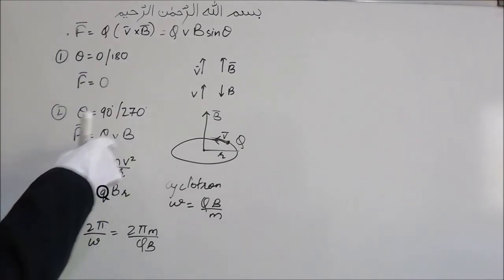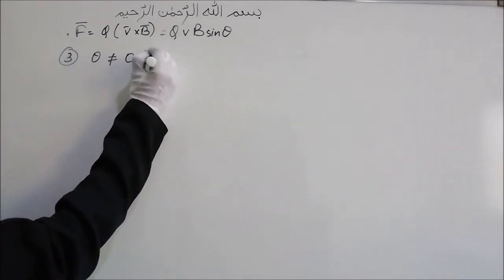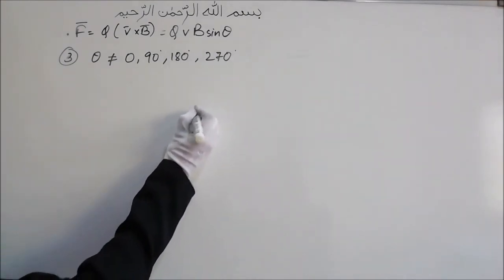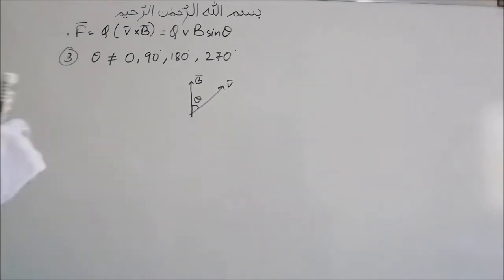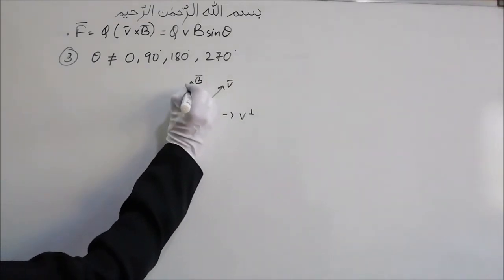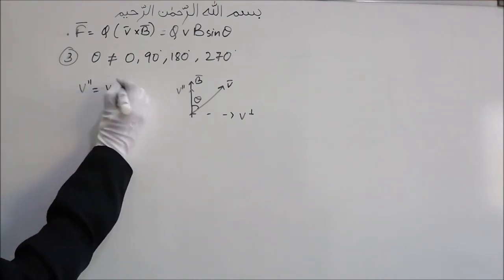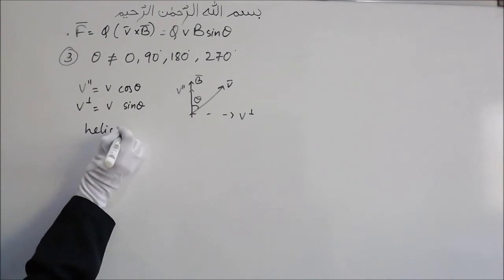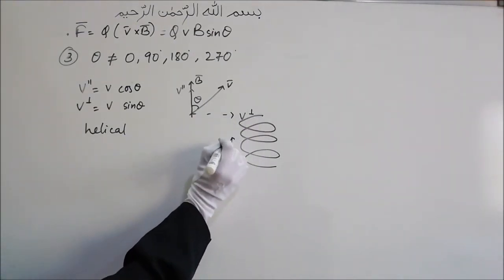Case 3: when θ is some angle other than 0°, 90°, 180°, or 270°. If the velocity is at angle θ to the magnetic field, we can resolve the velocity into two components: V perpendicular (the component of velocity perpendicular to the magnetic field) and V parallel (the component parallel to the magnetic field). V parallel = V cos θ and V perpendicular = V sin θ. In this case the path will be a helical path.